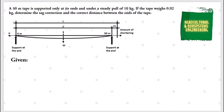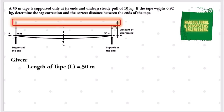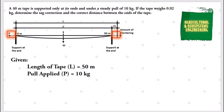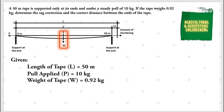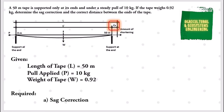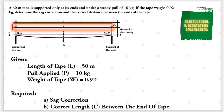The first thing we need to identify are the given values. First, we have the length of tape that measures 50 meters, followed by the pull applied on both ends of the tape which is 10 kilograms, and the weight of tape which is 0.92 kilograms. What is required in the problem are the sag correction, denoted by CS, and the correct length between the ends of the tape, caused by the sagging of the tape.